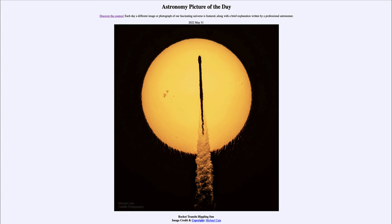If we had no atmosphere, the rocket launch could still be seen silhouetted against the sun; however, you would not see the distortion at the edge of the sun, because it takes our atmosphere to produce that effect. We also see a number of sunspots on the sun in this image.